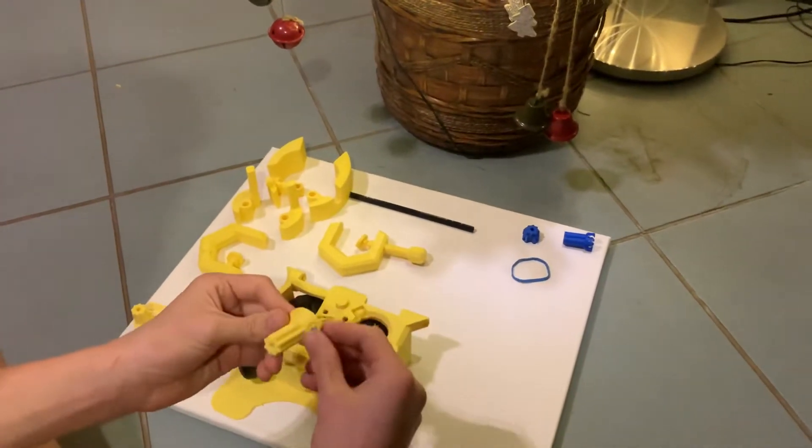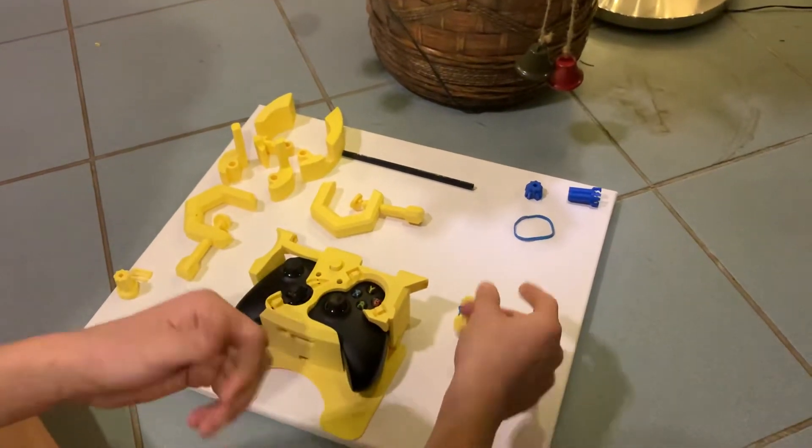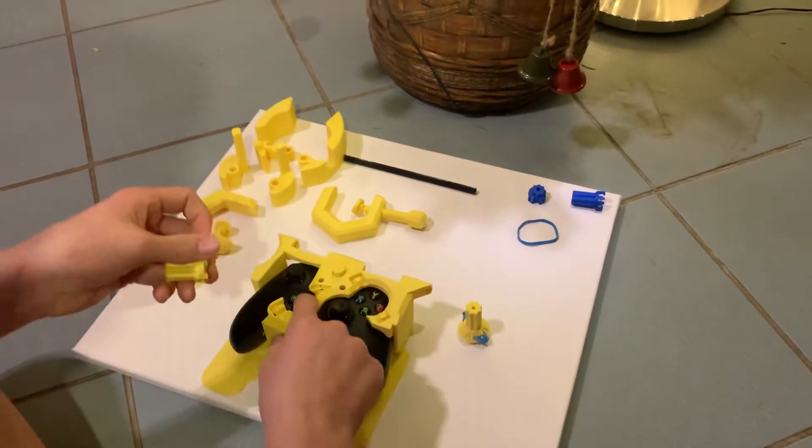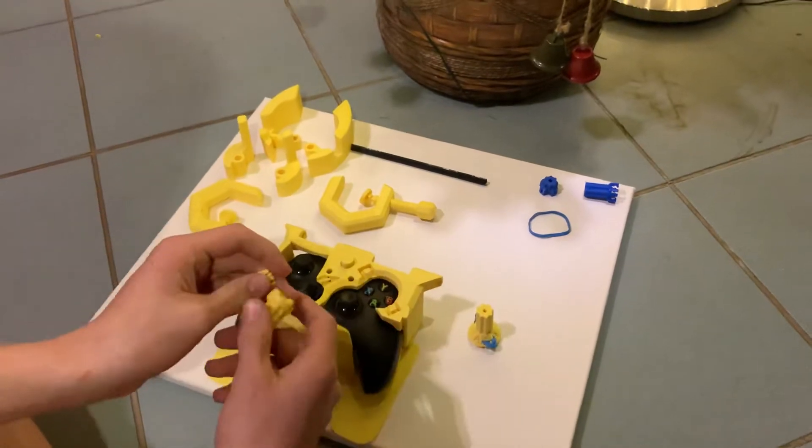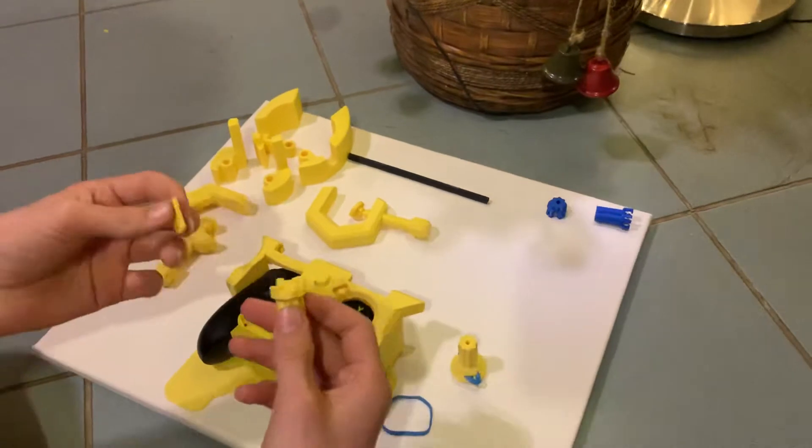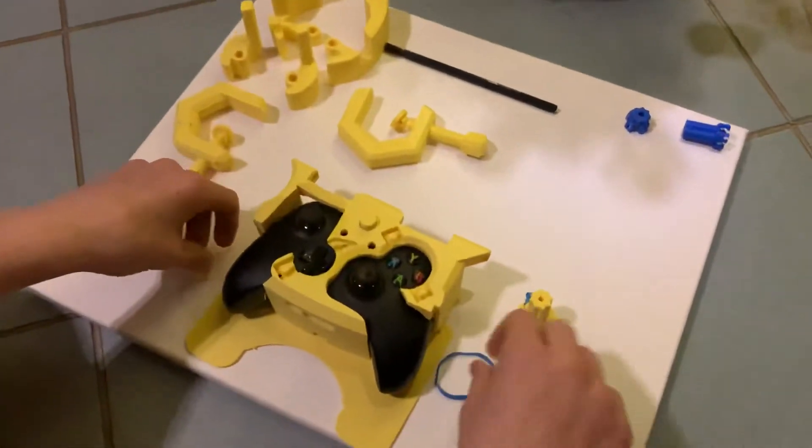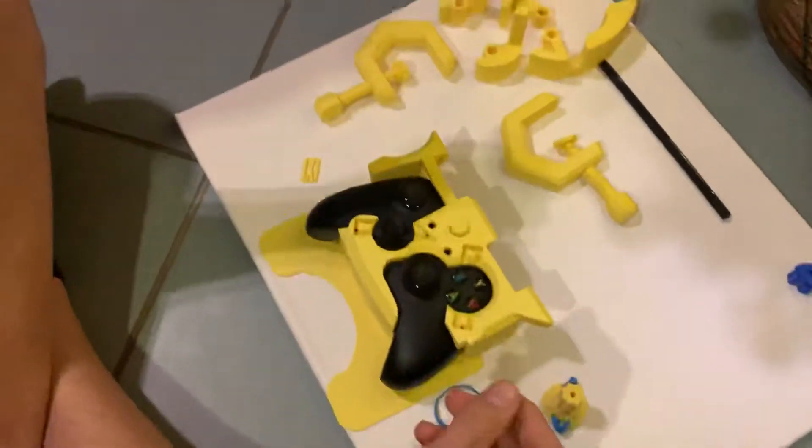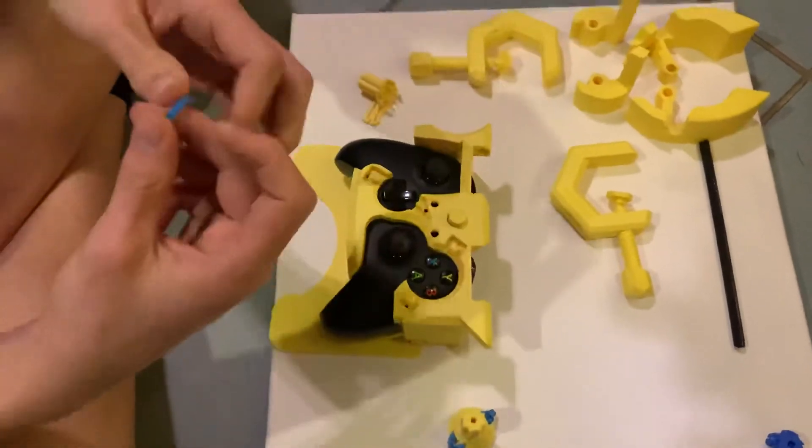Then, you just take the parts of the D-pad pusher and the button pusher and a regular rubber band. The way you assemble it is you take the top part. First of all, you take the rubber band,